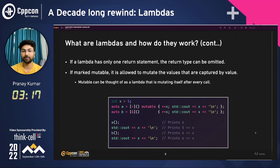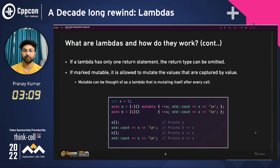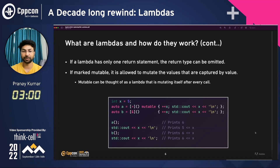As you can see in this example, x is captured by value, and the lambda is mutable, so it can mutate the value of x. If you print it inside the lambda, it would print as 6. But in the original function, x won't be modified — it would still print as 5. That isn't true for a variable captured by reference, such as b capturing x by reference.